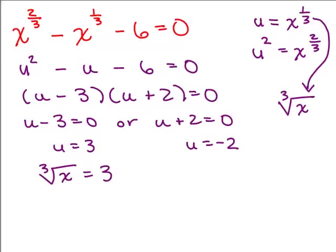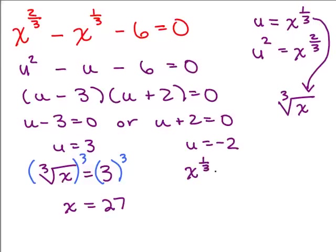Now we need to solve these. We have a cube root — to undo a cube root we cube both sides. If you had written it as x to the 1/3 and cube it, you get x to the 1st as well. Either way, you cube both sides, giving us x equals 27. For the other solution, writing x to the 1/3 equals negative 2, we cube both sides — 1/3 times 3 gives x to the 1st — and this gives us x equals negative 8. So it looks like we have two solutions.